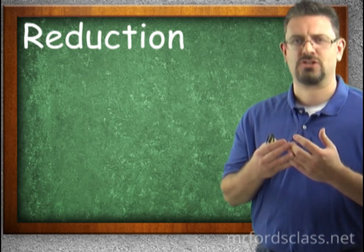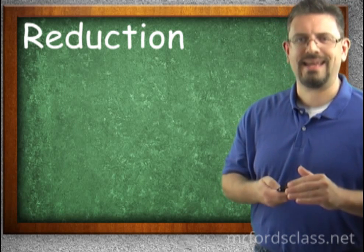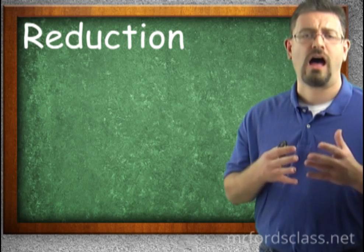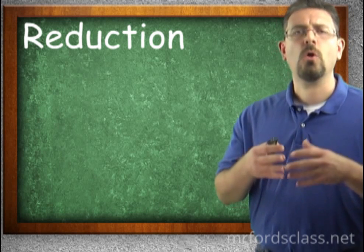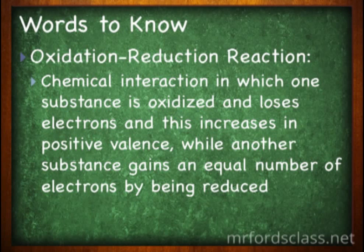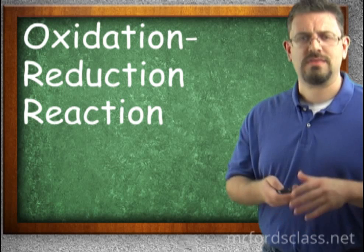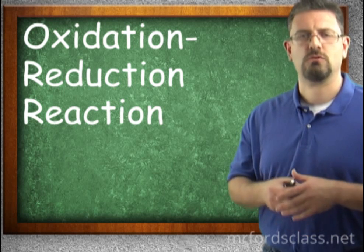We can have things called oxidation-reduction reactions. They are chemical interactions in which one substance is oxidized. In other words, they get rid of an electron and thus increase their positive valence. They're slightly more positive. While another substance gains the electron, is reduced, and becomes slightly more negative. This is an oxidation-reduction reaction.